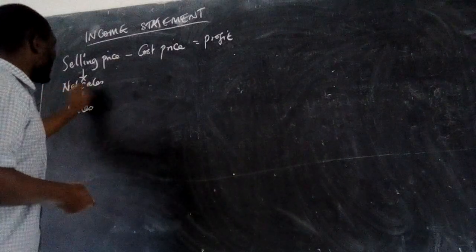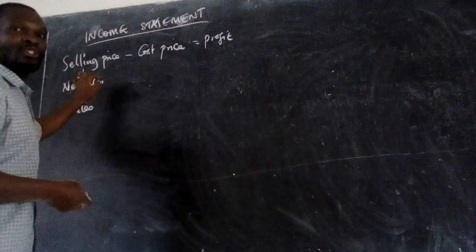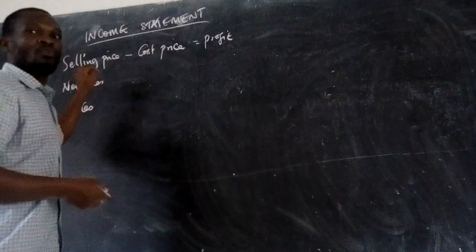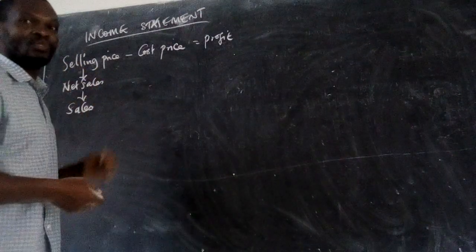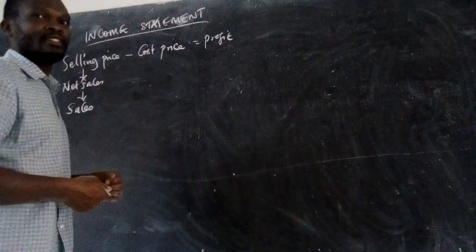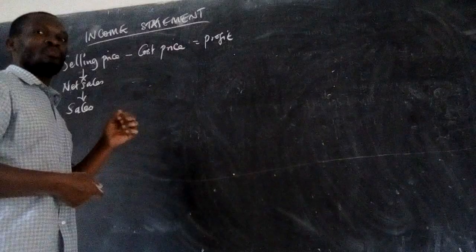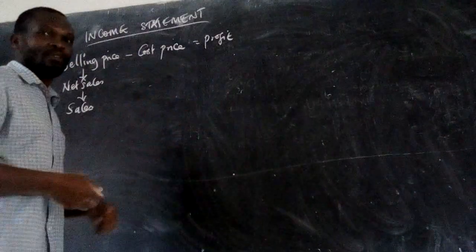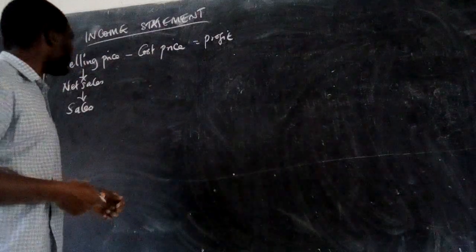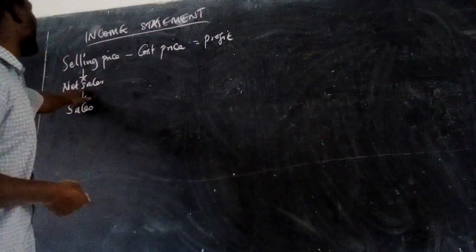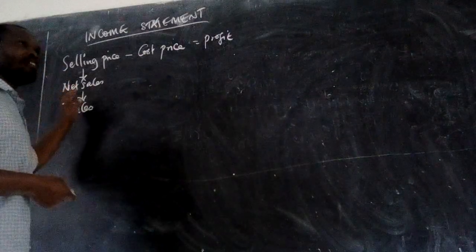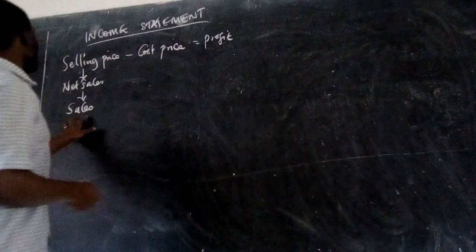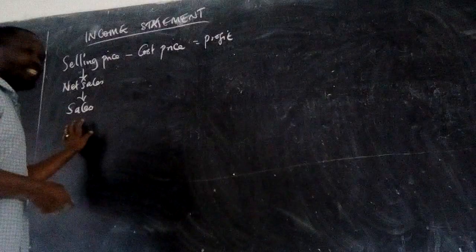Why net sales? Because you may be subtracting goods that have been returned to the business by customers who had taken them but are now returning them back. So you get the value of net sales. In case the goods have been sold and there are no returns, then you shall have just sales.